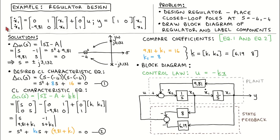Let's now move on to designing the regulator, which is the plant with just state feedback. The problem is to design state feedback such that both closed-loop poles are located at minus 4. Before designing a compensator, it is always a good idea to understand the plant dynamics. We calculate the open-loop poles by solving the characteristic equation: the determinant of sI minus A equals 0. This results in s equal to plus/minus j3.132, meaning the plant has a marginally stable pole pair with a natural frequency of 3.132 radians per second.